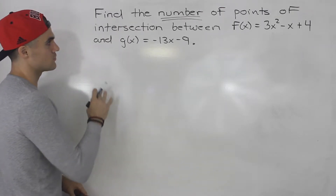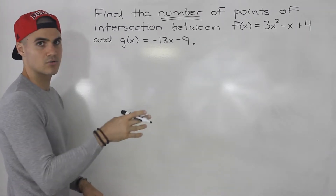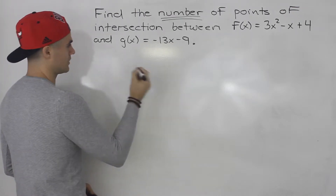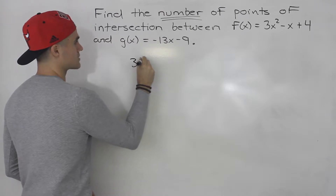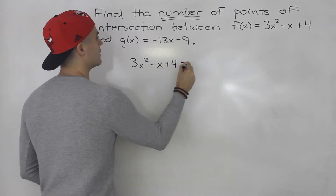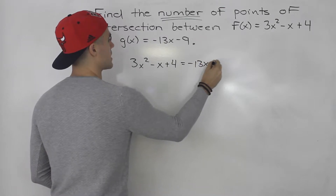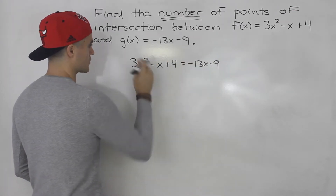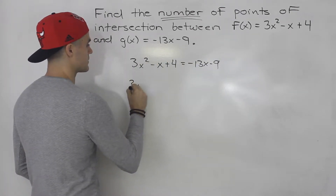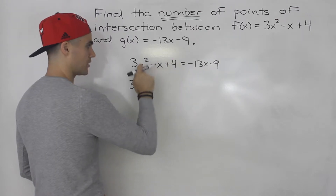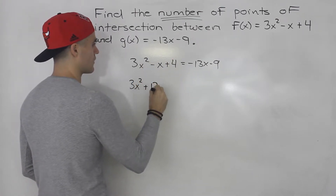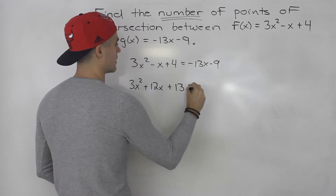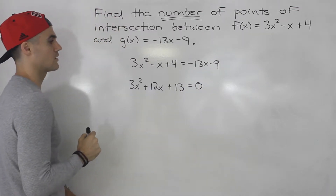The process is the exact same as before: take the two functions and make the y values equal. So we'd have 3x squared minus x plus 4 equals negative 13x minus 9. Then bring everything over to one side: 3x squared plus 12x plus 13 equals 0.